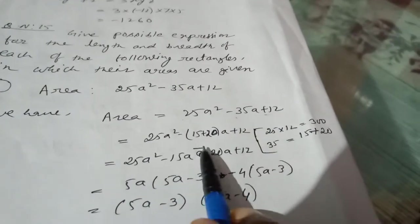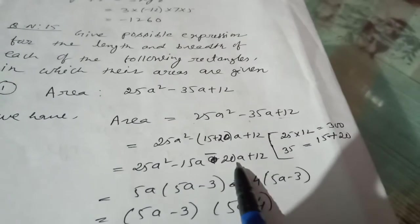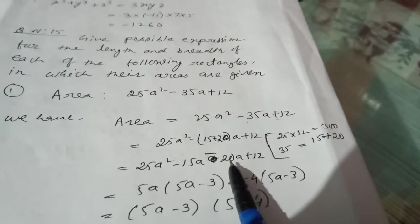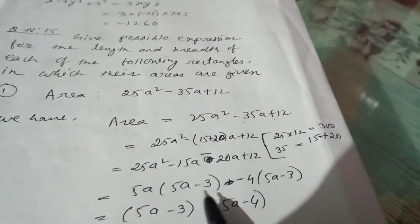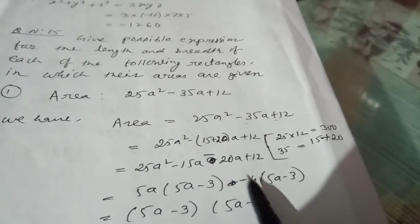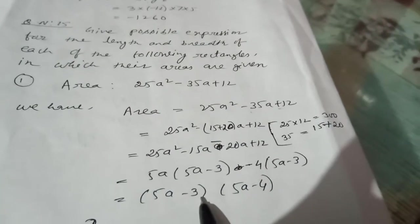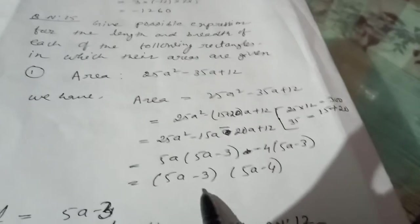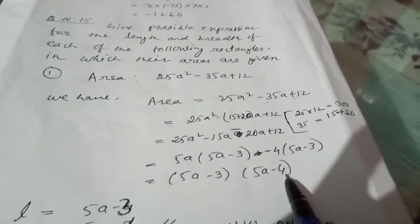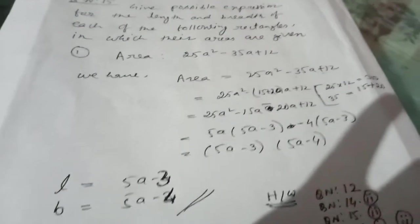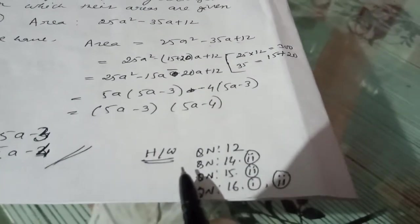Replace 35a with 15a + 20a: 25a² - 15a - 20a + 12. Taking common factors: 5a(5a - 3) - 4(5a - 3) = (5a - 3)(5a - 4). So the length is (5a - 3) and the breadth is (5a - 4).